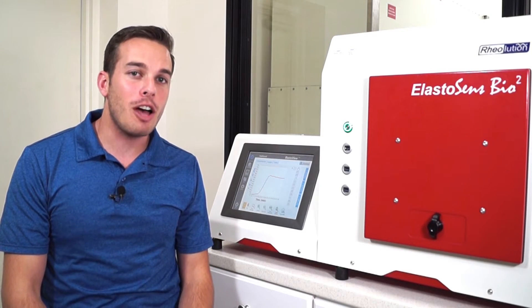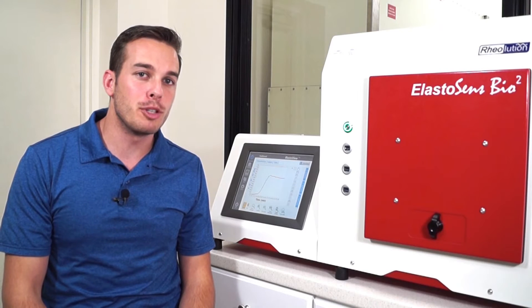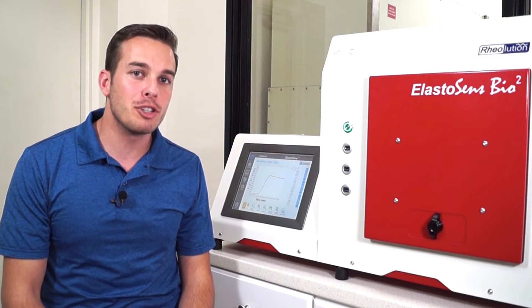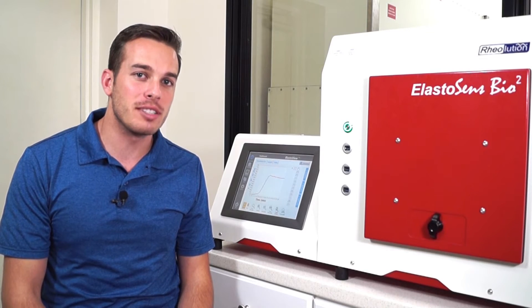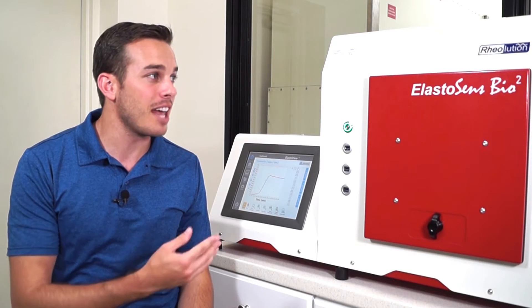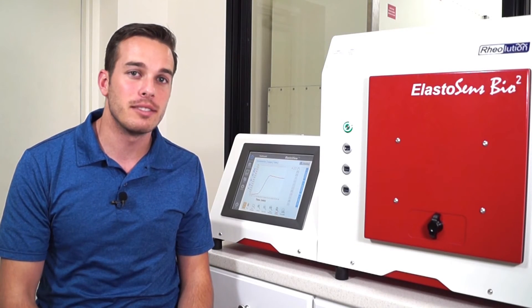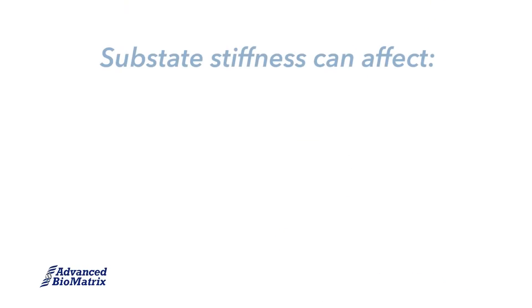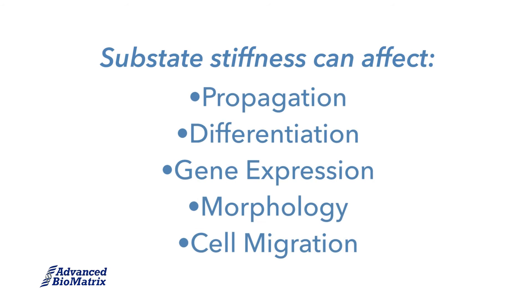On every lot of collagen we produce, we measure the kinetic gel stiffness using Elastosense. We found that substrate stiffness can affect propagation, differentiation, gene expression, morphology, and cell migration.